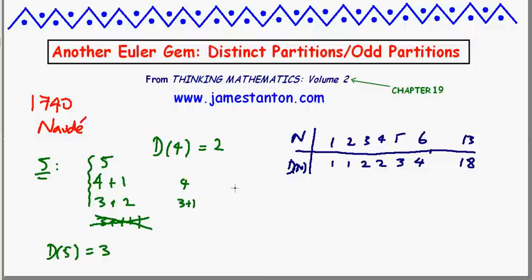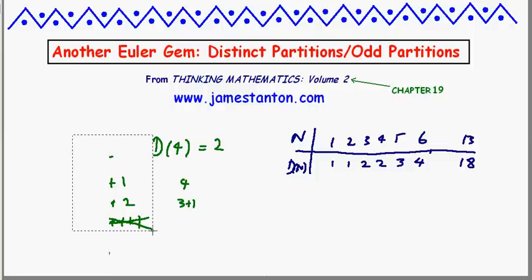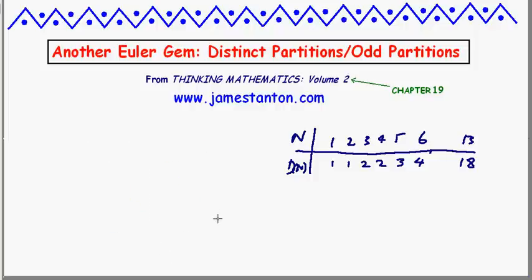Naudet was just playing with this for fun, and he wrote to Euler about these distinct partitions. Euler discovered something remarkable: not only did he look at distinct partitions, but he realized — in the course of just one evening, the tale goes — that these distinct partitions are very much connected with another type of partition, which we'll call O(N): the odd partitions.